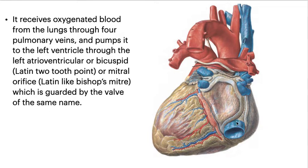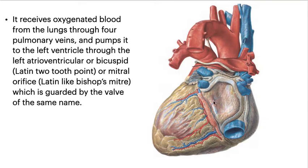The left atrium receives oxygenated blood from the lungs through four pulmonary veins, and pumps it to the left ventricle through the left atrioventricular valve, also known as the bicuspid or mitral valve.